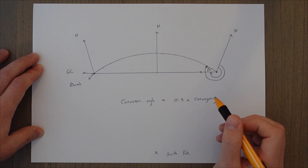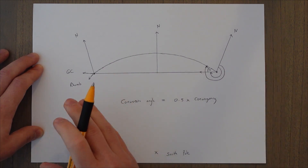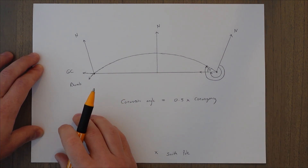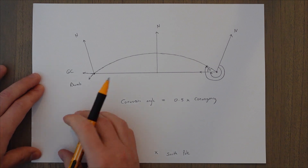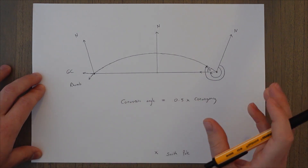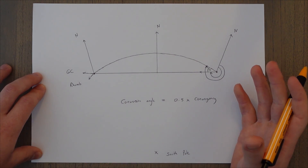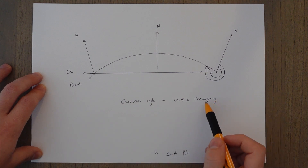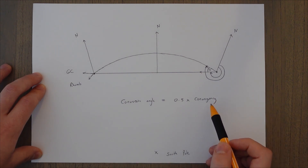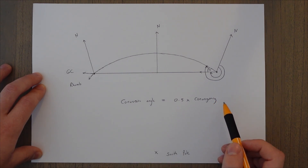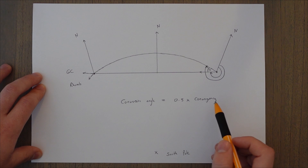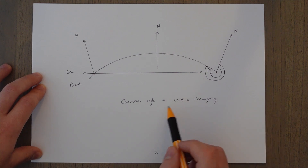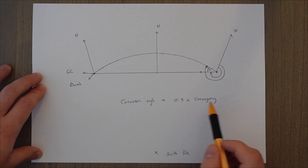The convergency equation — sine latitude times change in longitude — isn't always applicable; it depends on what type of chart we're using. But for now, think of convergency as sine latitude times the change in longitude, and the conversion angle as 0.5 times that. The conversion angle is always half of the convergency.